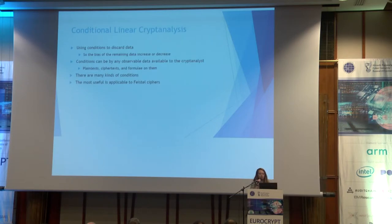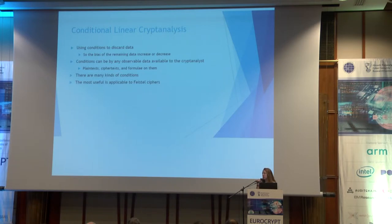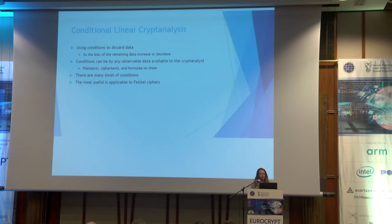Linear cryptanalysis uses statistical approximations that approximate parity of subsets of bits of the plaintext, ciphertexts, and the subkeys. We use conditions to discard some of the data, so the bias of the remaining data may increase or decrease. Conditions can be defined by any observable information: plaintext bits, ciphertext bits, and a formula of them.